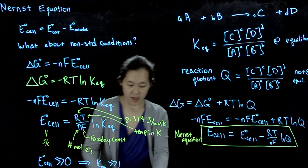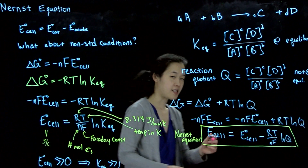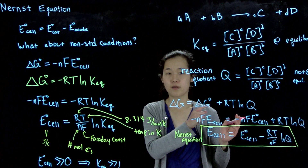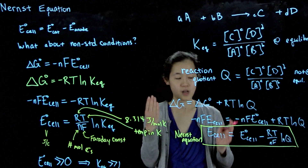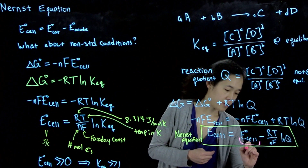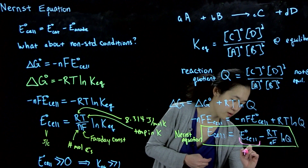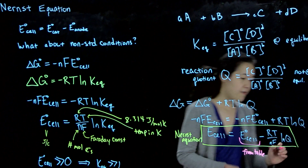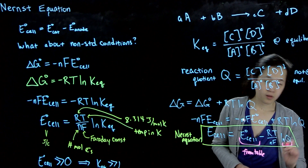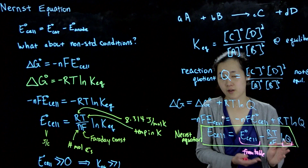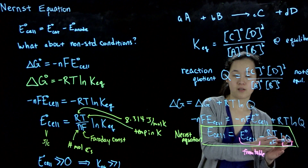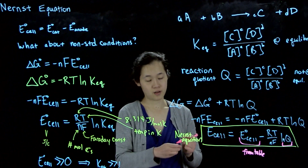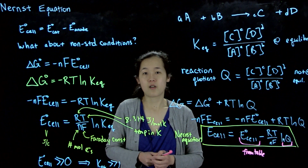What this means is that if we know our standard cell potential — which we can derive or read from a table by simple subtraction — and if we know Q (either by measuring concentrations or knowing the set starting concentrations), then we can calculate the actual cell potential even under non-standard conditions.